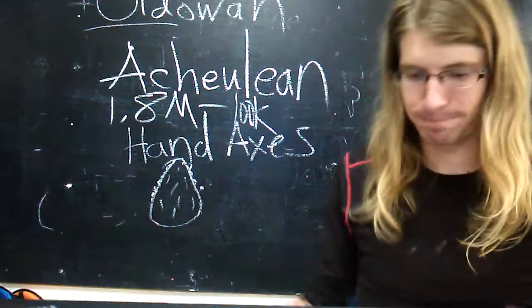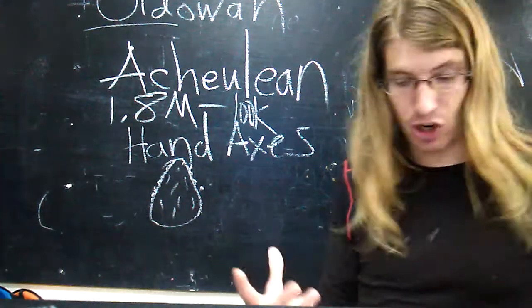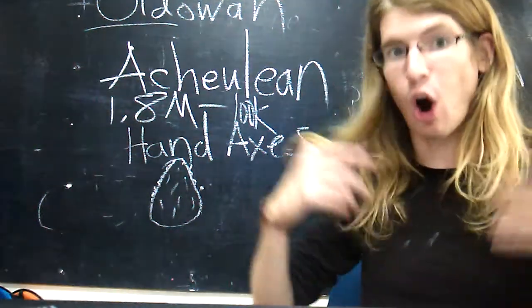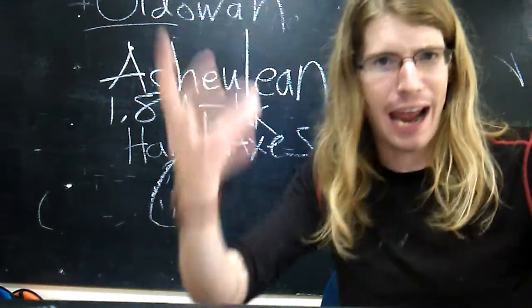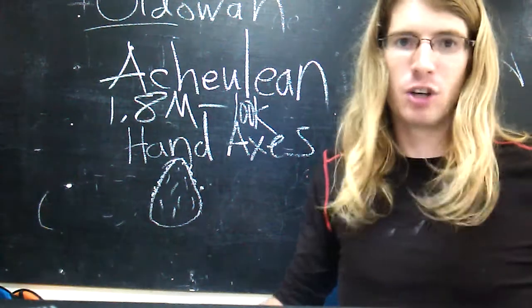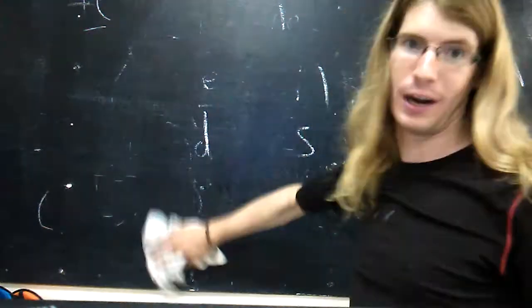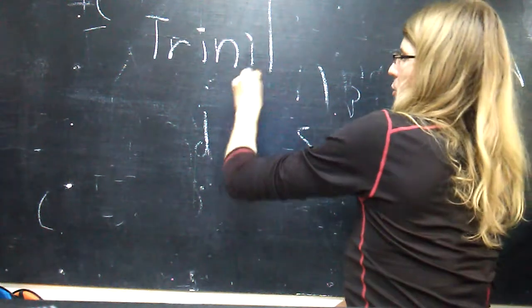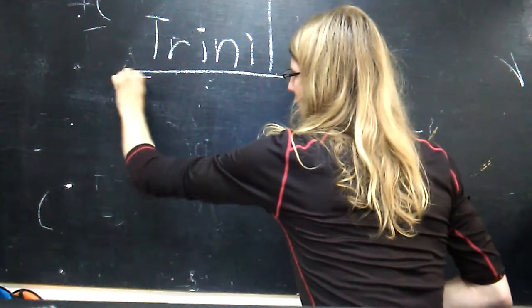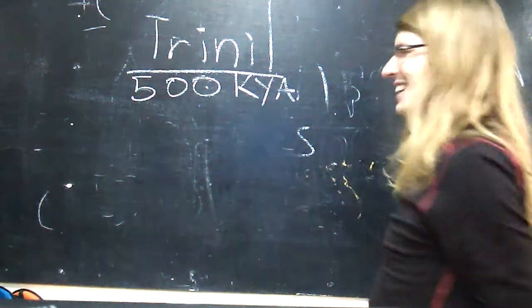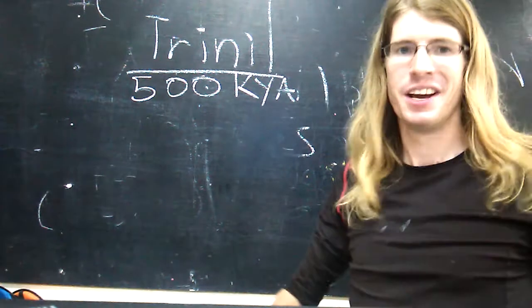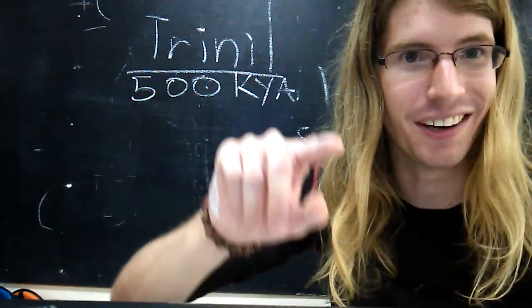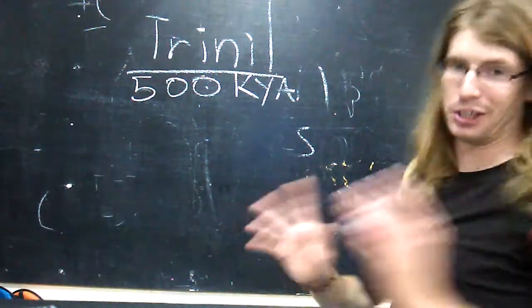Toward the end of erectus's tenure and toward the end of the Acheulean period, we are starting to see some tantalizing glimpses of what may have been true art, or at least some sort of abstract imagining in the proper sense. Let's go back again to Indonesia. At the Trinil sites, with Trinil we're looking at probably 500,000 years ago.